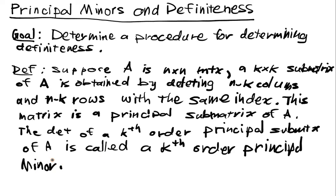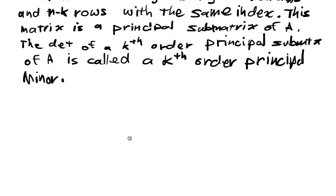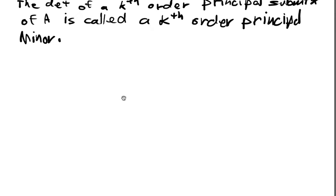Minors, of course, we saw when we were talking about the inverse or the adjugate of a matrix — those showed up. Those minors were n minus one-th order principal minors. Actually, they weren't principal minors; they were just minors, because we were taking out things with different indices. So, a quick example to just make this concrete.